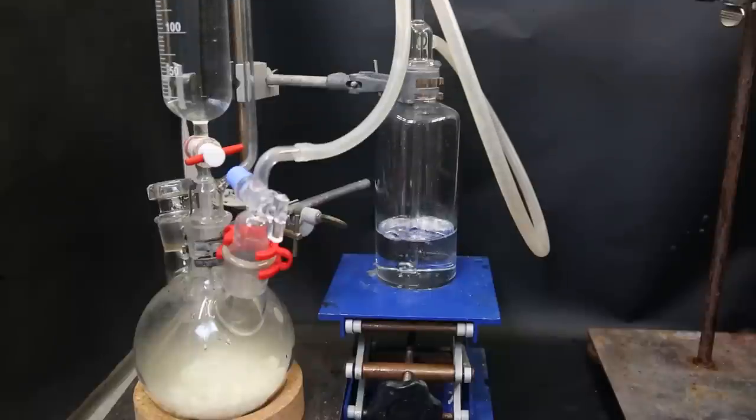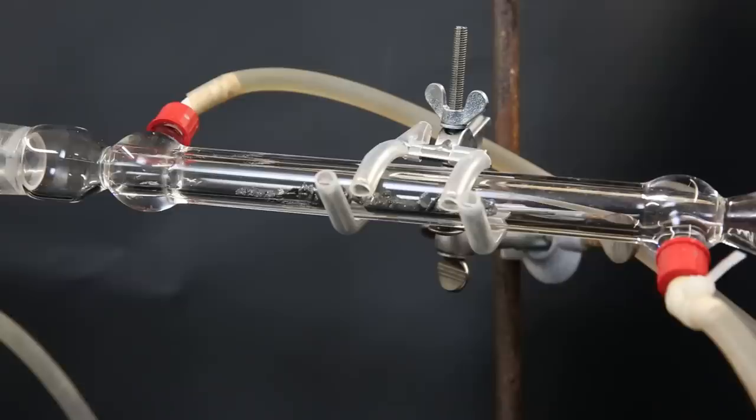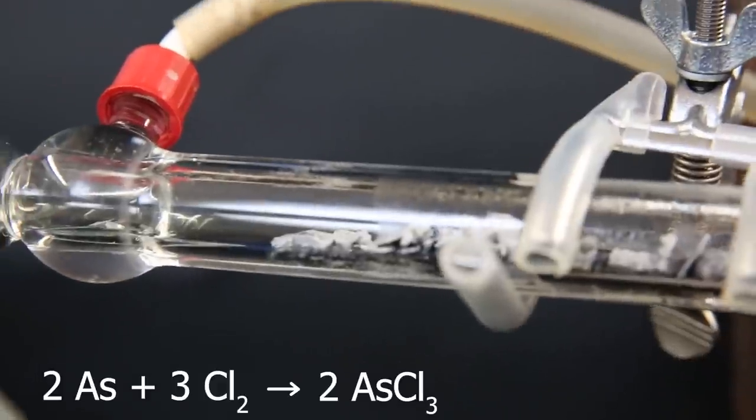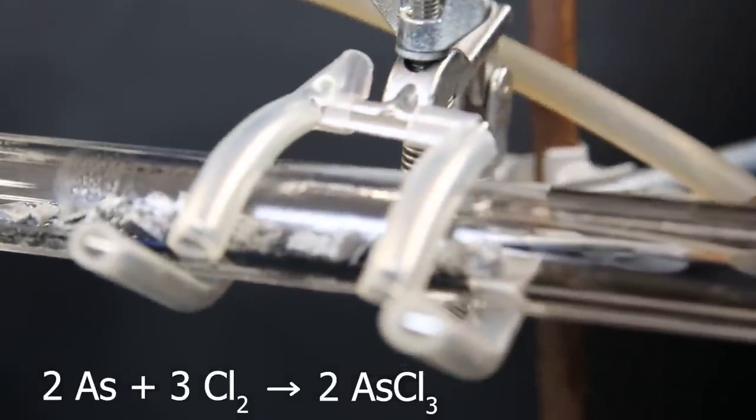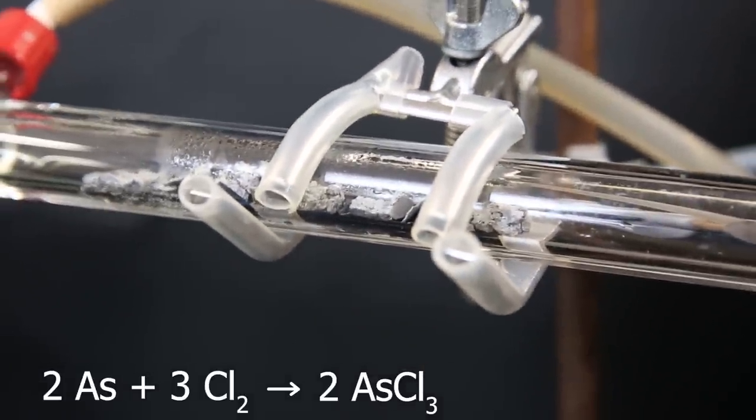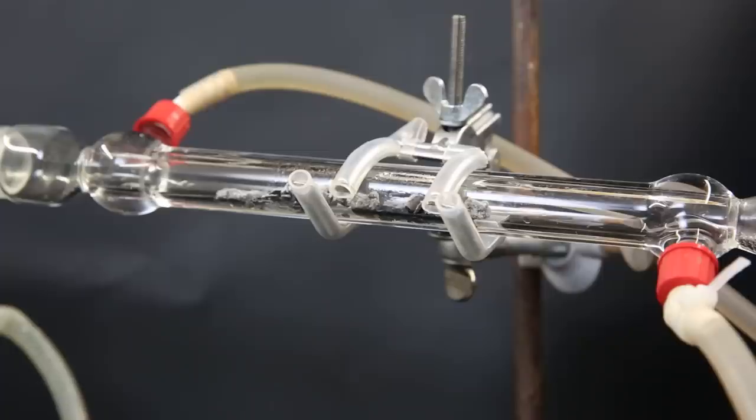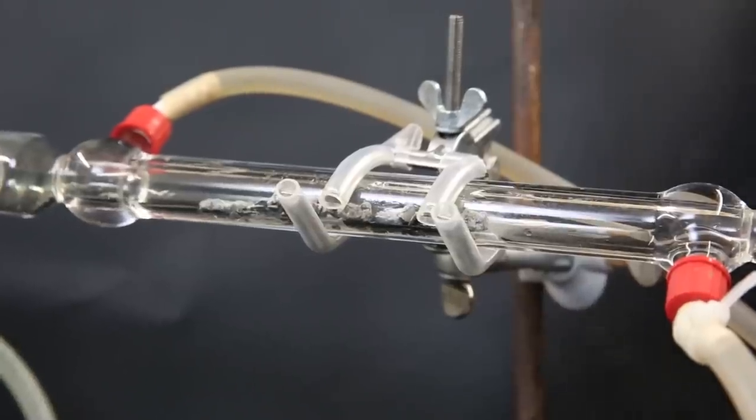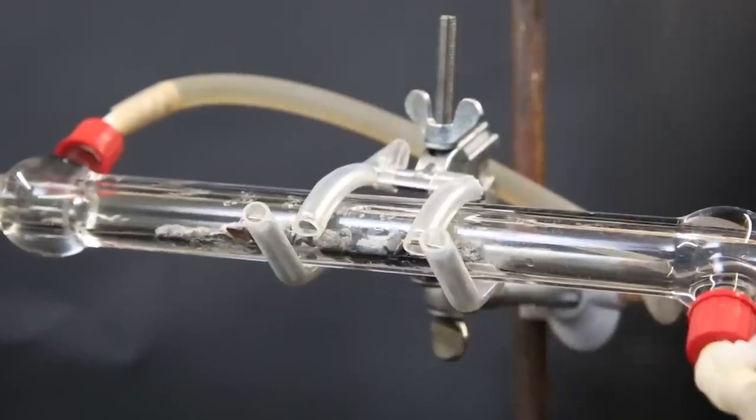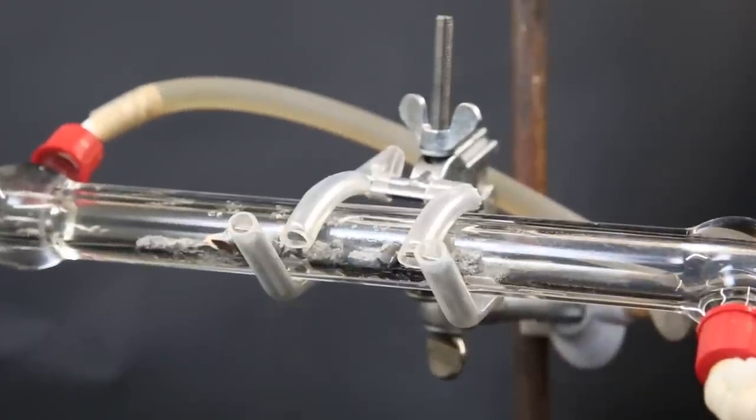We can see gas is starting to go through the gas washing bottle. At first, not much is happening, since all of the air still has to be pushed out. So we wait for the chlorine to fill the apparatus. After a few minutes, we can see something is happening. The arsenic pieces are becoming white, and some vapors are condensing in the apparatus. I test out some different speeds of the chlorine production, and when a lot of chlorine is produced, the reaction causes the arsenic pieces to ignite and glow from the heat that is produced in the reaction.